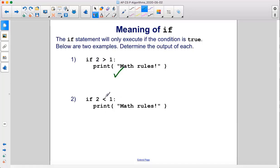If 2 is less than 1, print math rules. 2 is less than 1 is a false condition, so this will not run.